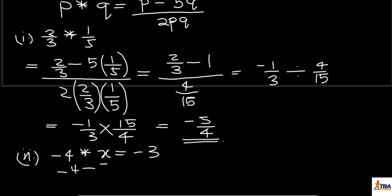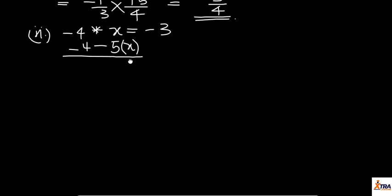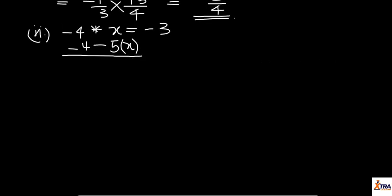So, we have minus 4 minus 5Q, that is 5x, all over 2PQ. So, that is 2 times minus 4 times Q, which is x, equals to minus 3.